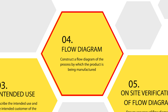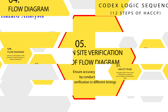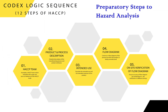The fourth step is to construct a flow diagram of the process by which the product is made, or the flow diagram of the product itself. The fifth step is to validate and verify the flow diagram under different conditions and at different times, to ensure it is accurate. These five steps are also called the preparatory steps, leading towards hazard analysis.